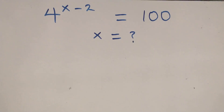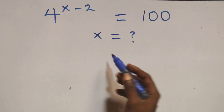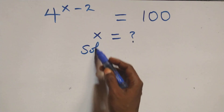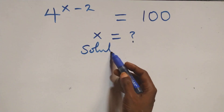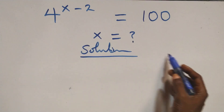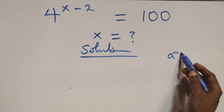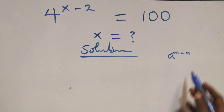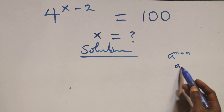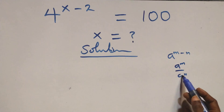Welcome. Let's solve this exponential equation. From what we have here, this follows the rule: a raised to power m over n is the same thing as a raised to power m over a raised to power n.